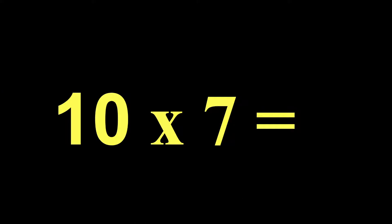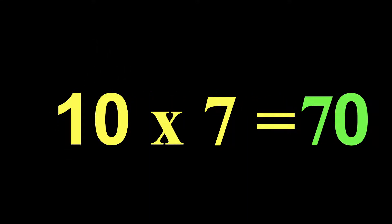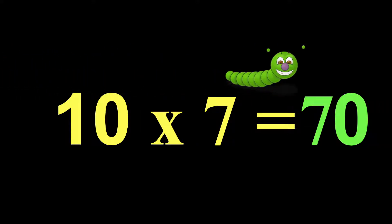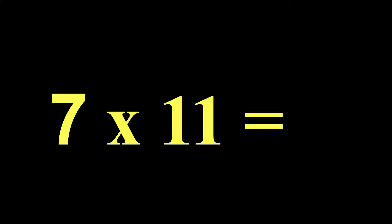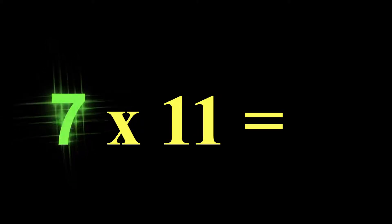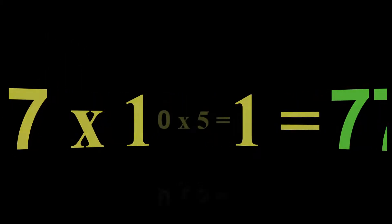10 times 7. So we start with our other number, and what are we going to do? Add a 0. So 10 times 7 is 70. Now 7 times 11 — the 11 rule means we are going to take the other number and double it. So 7 times 11 is 77.